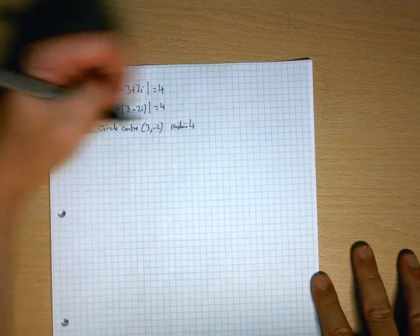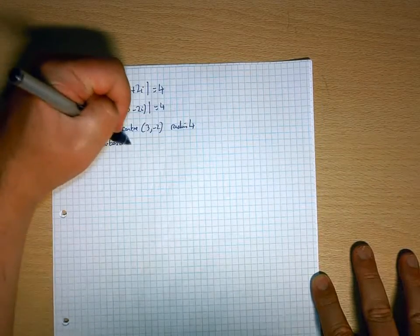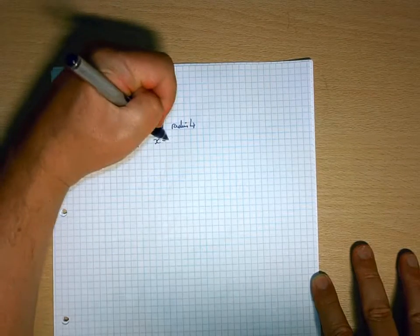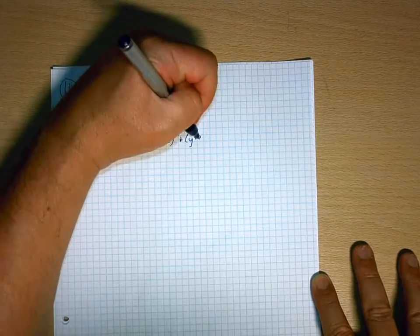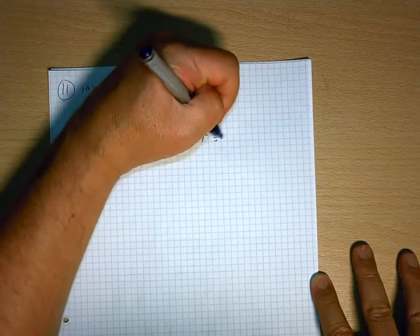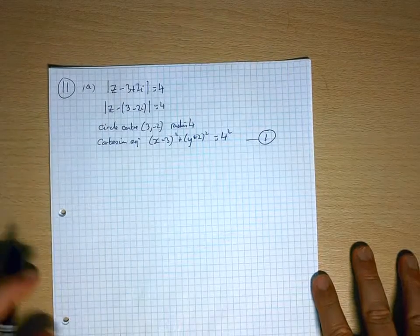Write down straight away what the Cartesian equation of that is. So you'll have x take 3 squared, plus y plus 2 squared, equals 4 squared. Equation 1.